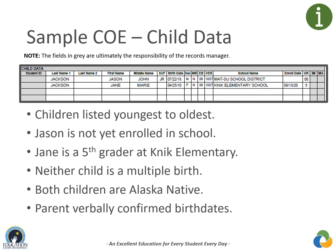In this sample COE, there are two children listed from youngest to oldest. Both being on the same COE means they made the same qualifying move with the same migratory worker. Jason John Jackson Jr.'s parent confirmed he was born on 7-22-18; Jason is not yet enrolled in school. Jane Marie Jackson's parent confirmed she was born on 4-25-10; her first day of school after her most recent qualifying move was 8-13-20, and she is in fifth grade. Neither child was part of a multiple birth, and both are Alaska Native.